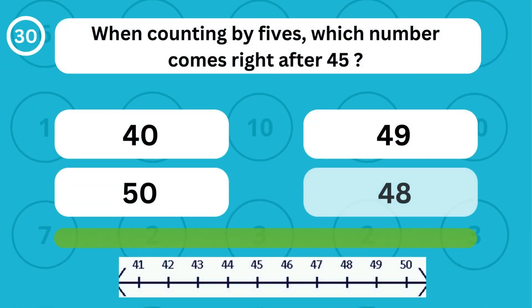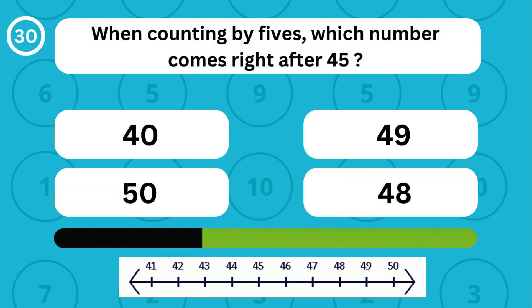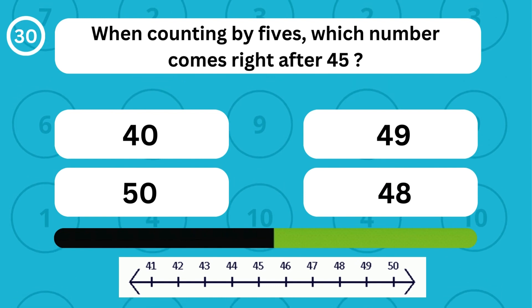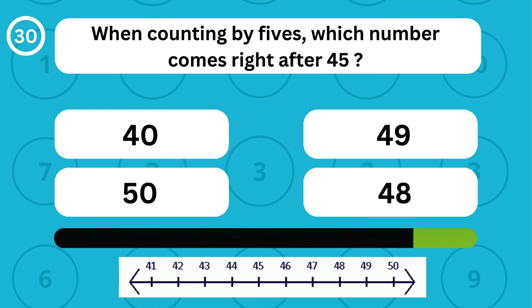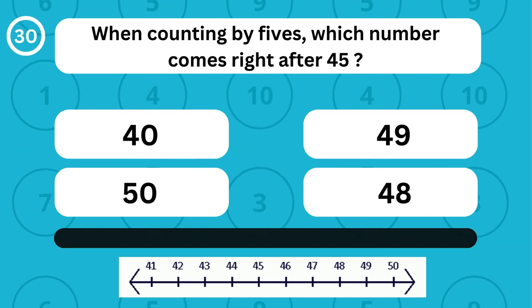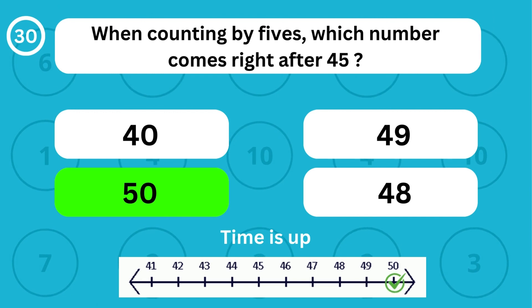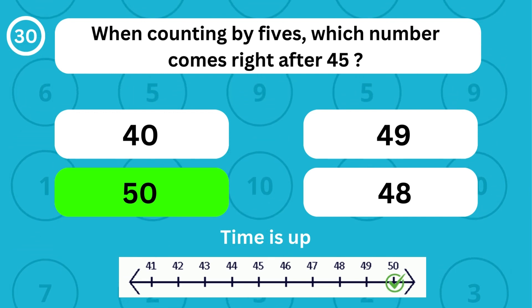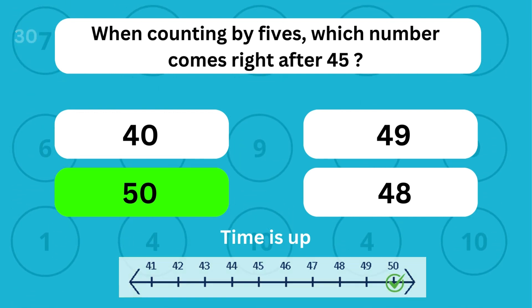When counting by fives, which number comes right after 45? When counting by fives, the number 50 comes right after 45.